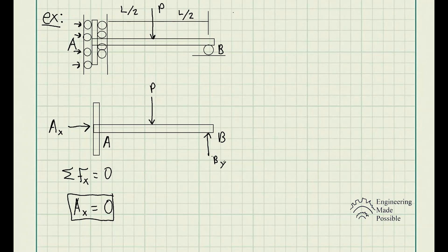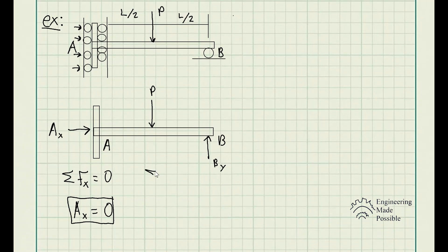We only have B, the reactionary. In this case, we could do the sum of forces along the Y direction equal to 0. Let's go ahead and say upward is positive. So we have B-Y minus P is equal to 0. We could see that the reactionary force B-Y is equal to the force P here.